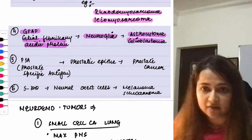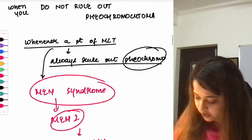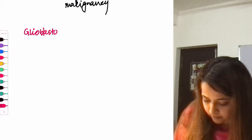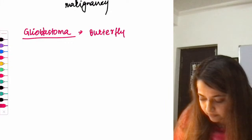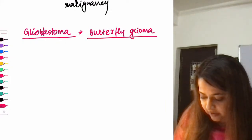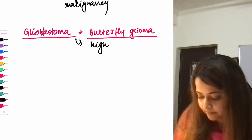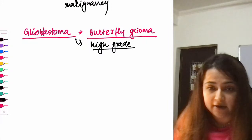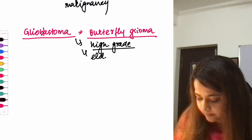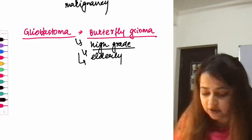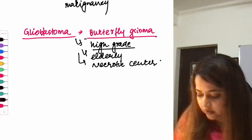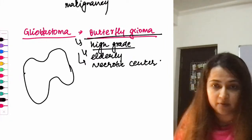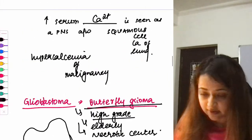Glioblastoma is also known as butterfly glioma because it crosses the midline, giving a butterfly appearance on neuroimaging. It is a high-grade astrocytoma occurring in the elderly, and imaging shows a necrotic center.